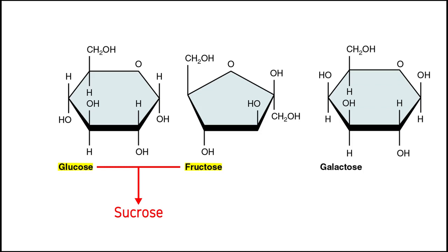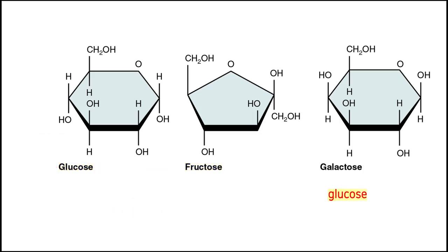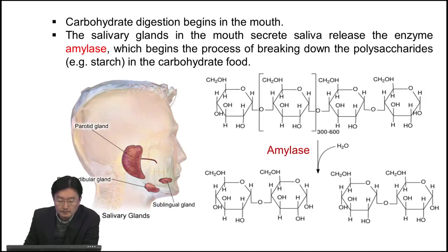When two glucose molecules are linked, that sugar is called maltose. And when glucose and galactose are linked, that disaccharide is called lactose. You're probably very familiar with these different types of sugars — lactose, maltose, sucrose — and they can easily be found on food labels.